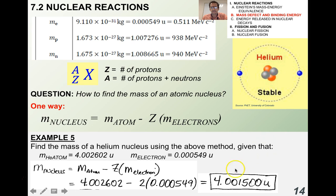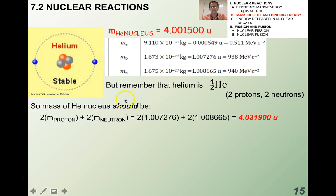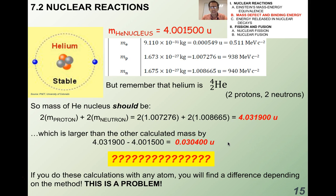When you do it, you find that the mass of the nucleus is 4.001500 atomic mass units. But remember that helium has two protons and two neutrons. So the mass of a helium nucleus should be, if I multiply the mass of a proton plus the mass of a neutron with two of each, I end up with a number that is not the same. In fact, the difference is 0.030400 atomic mass units. What is going on here?